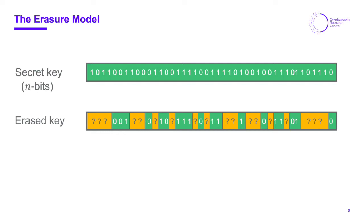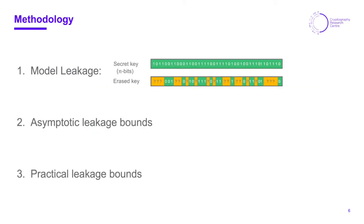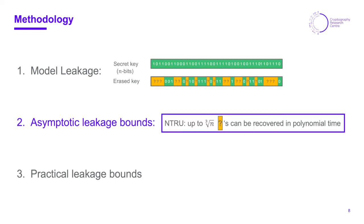Given this erased key we asked two different research questions. The first one is about asymptotic leakage bounds. Basically we are asking how many erasures, how many erased bits, how many question marks can we tolerate so that we can still recover all of them in polynomial time. For example in the NTRU case we find that up to a cube root of the length of this vector, many erased bits can still be recovered in polynomial time.